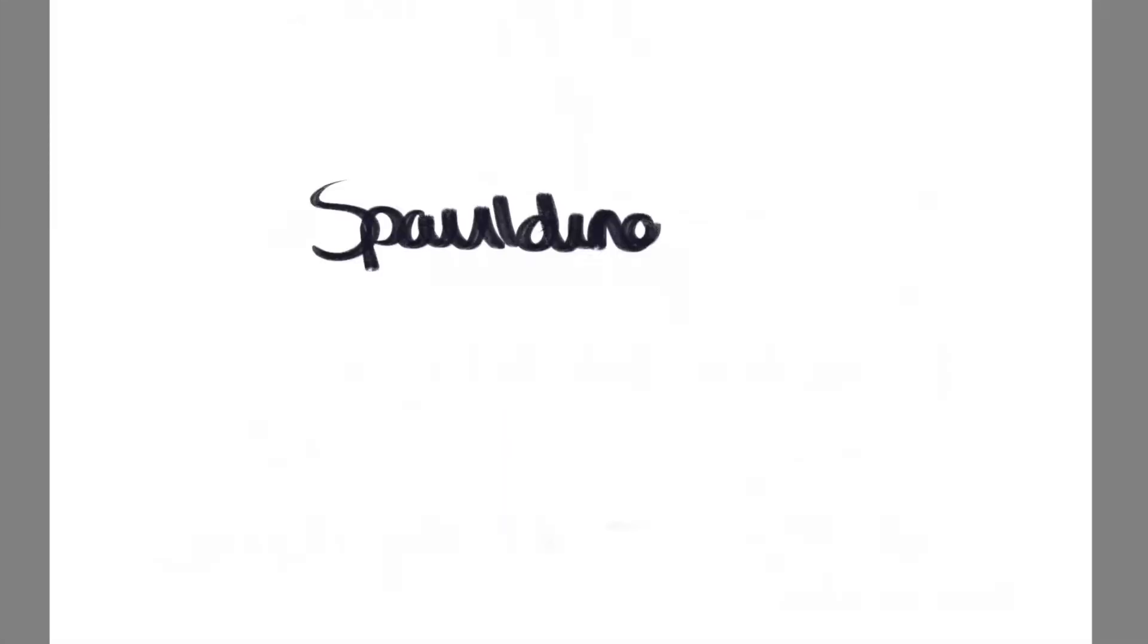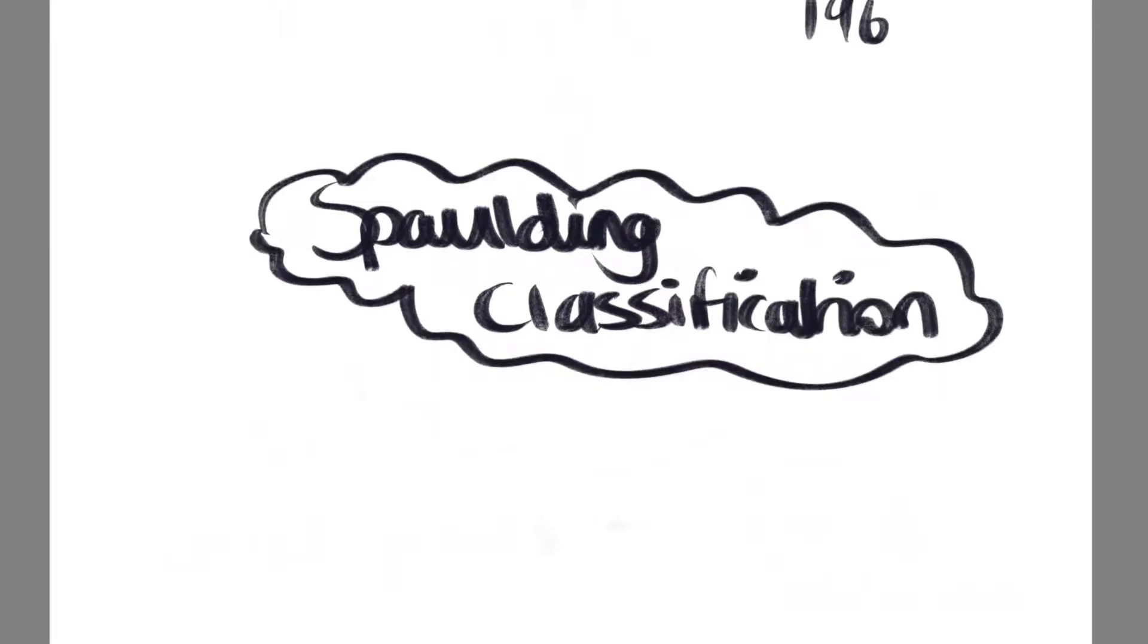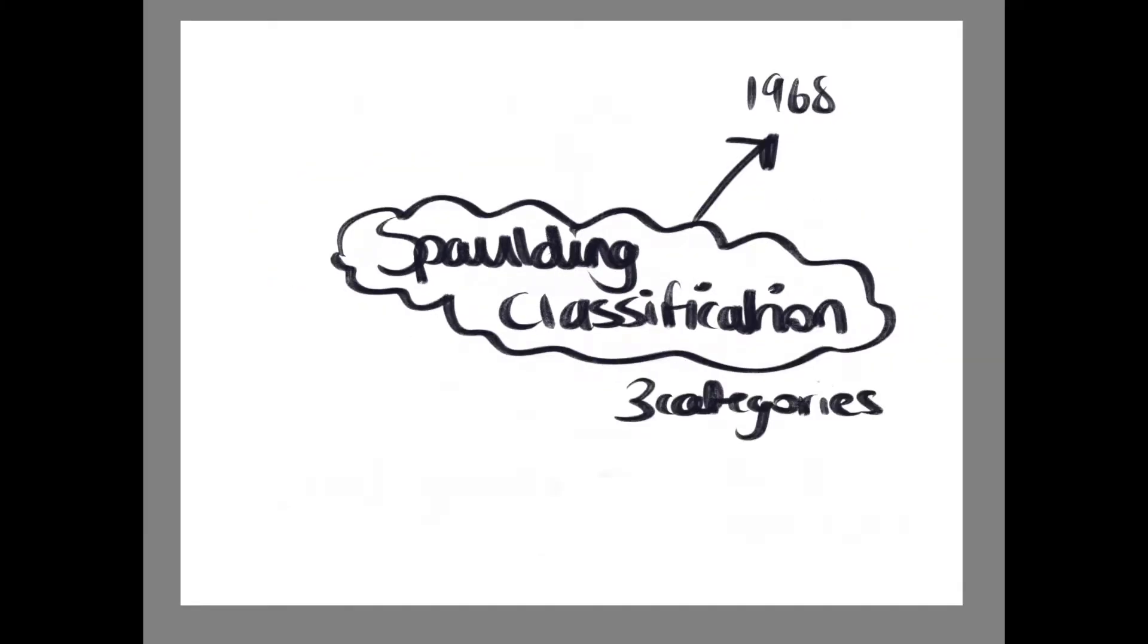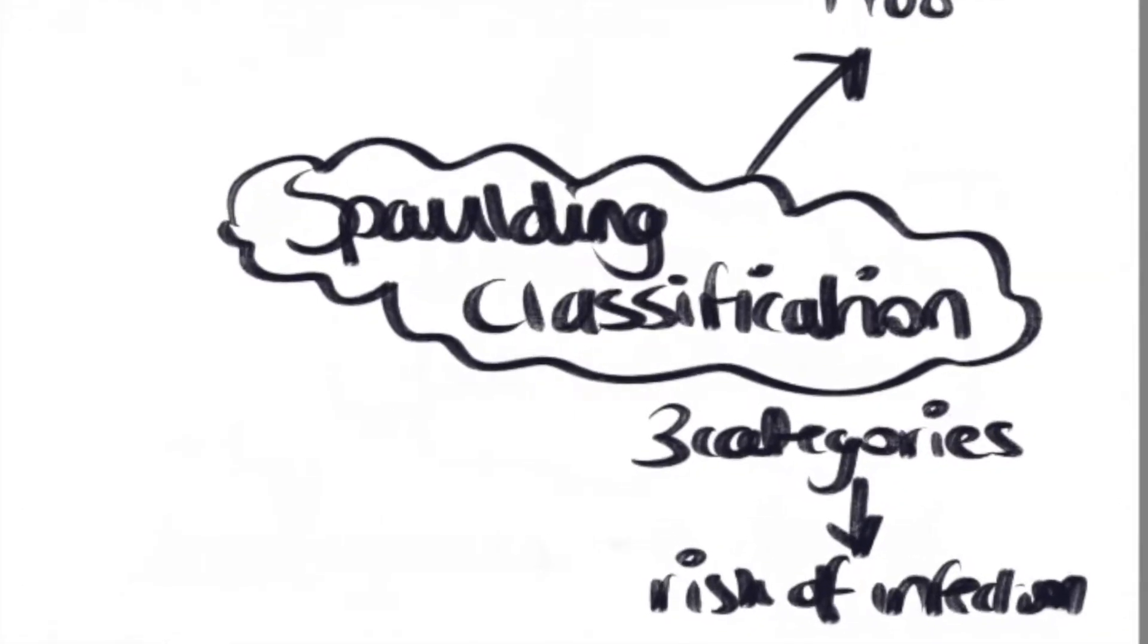Introduction: The Spalding classification of decontamination was developed in 1968. It describes three categories based upon the level of risk of infection involved with their use.